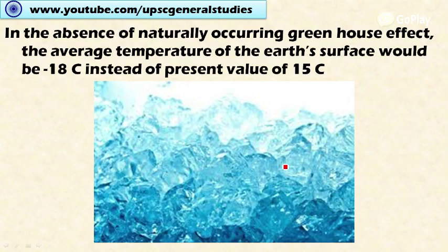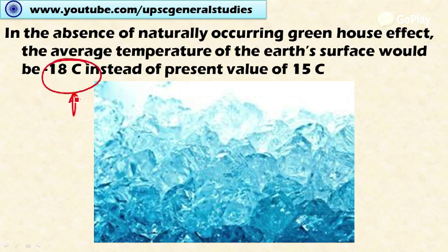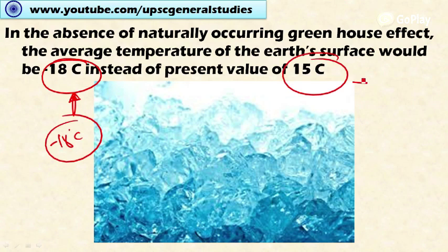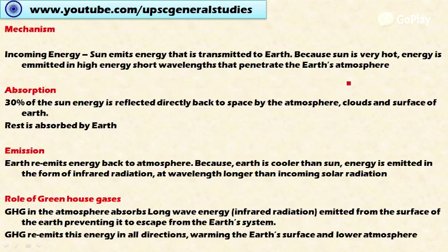In the absence of the naturally occurring greenhouse effect — if there were no greenhouse gases to absorb heat radiated from the Earth — the average temperature of the Earth's surface would be minus 18 degrees Celsius. There would be no life on Earth at that temperature. At present, the average temperature is 15 degrees Celsius because of the presence of greenhouse gases.